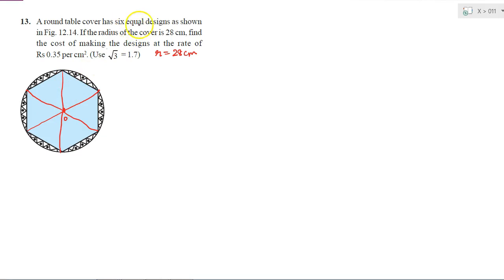So if all the 6 designs are equal, that means that all the 6 areas are equal, and all the angles obtained at the center will also be equal. So what will be this angle? This angle will be 360 by 6, which is 60 degrees. So angle of each sector is 60 degrees.